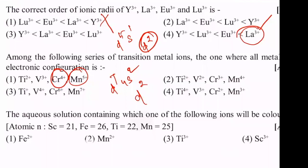Then we have V3+. Let's check if you have V3+ — yes, V3+ gives D2. Do we have D2? Yes, sir. Then we have titanium 2+. Yes, D2 configuration. Option 1 is the correct answer. All ions are D2 — that is the correct answer.